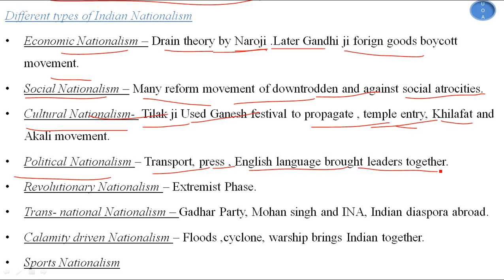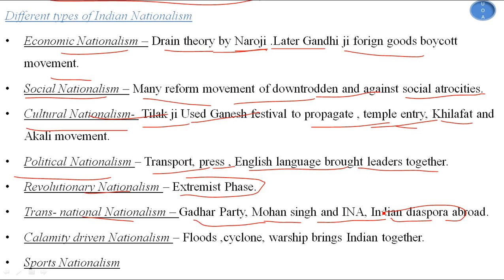Political nationalism was fostered as transport, press, and the English language brought leaders together. Revolutionary nationalism is represented by extremist figures. There is also transnational nationalism — Ghadar Party, Mohan Singh, and the Indian National Army (INA), along with the Indian diaspora abroad, are part of transnational nationalism. Calamity-driven nationalism occurs when floods, cyclones, or other disasters bring India together.